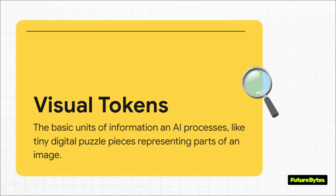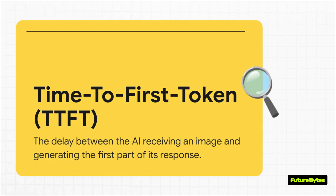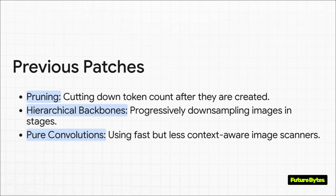A traffic jam, really. And this delay has a name — it's a critical metric called time-to-first token, or TTFT. It's that frustrating pause between when you show the AI an image and when you get the very first word of its response back. Cutting that lag time down has been an absolute obsession for researchers, especially the ones at Apple. So for years, researchers have been trying all these clever tricks to manage this token explosion.